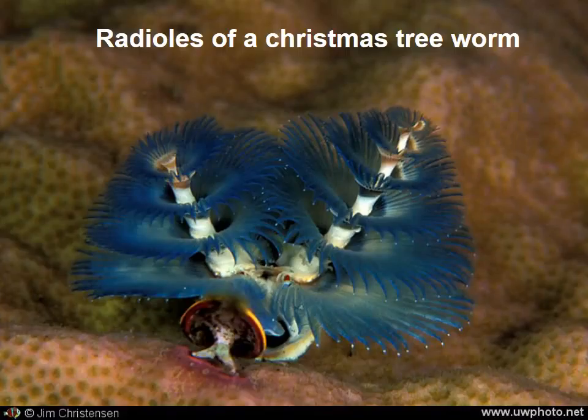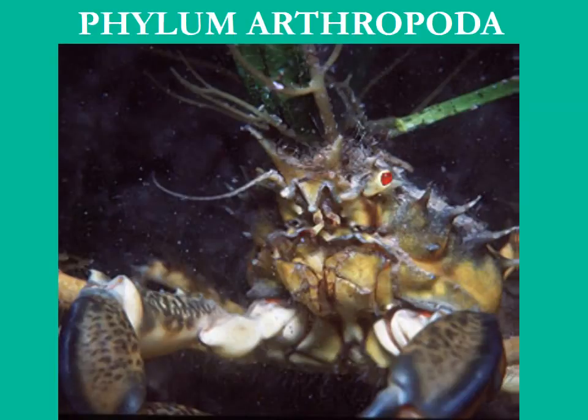We'll move on to the annelids — the earthworms, polychaetes, and leeches. They can be really big, or they can be very small. This is a little Christmas tree worm living inside a coral polyp, and this has its filter-feeding appendages out, which will be all you'll ever see of this worm unless you dig it out.